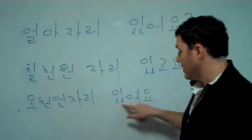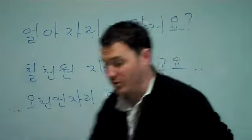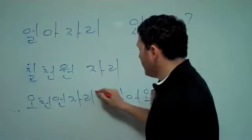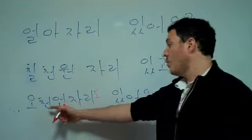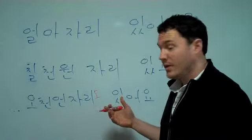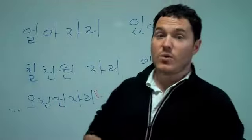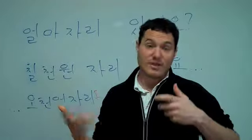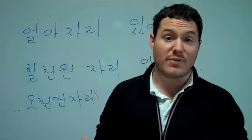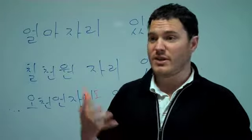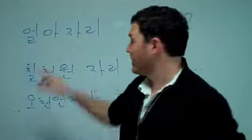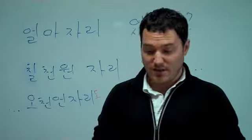5,000원 자리 있어요. We could even put 도 there. 5,000원 자리도 있어요. So this would be saying that we have one for 7,000 won, and we have one for 5,000 won. So these are the two different 자리. Basically, when they say 자리, that's what they mean, the two different ones.